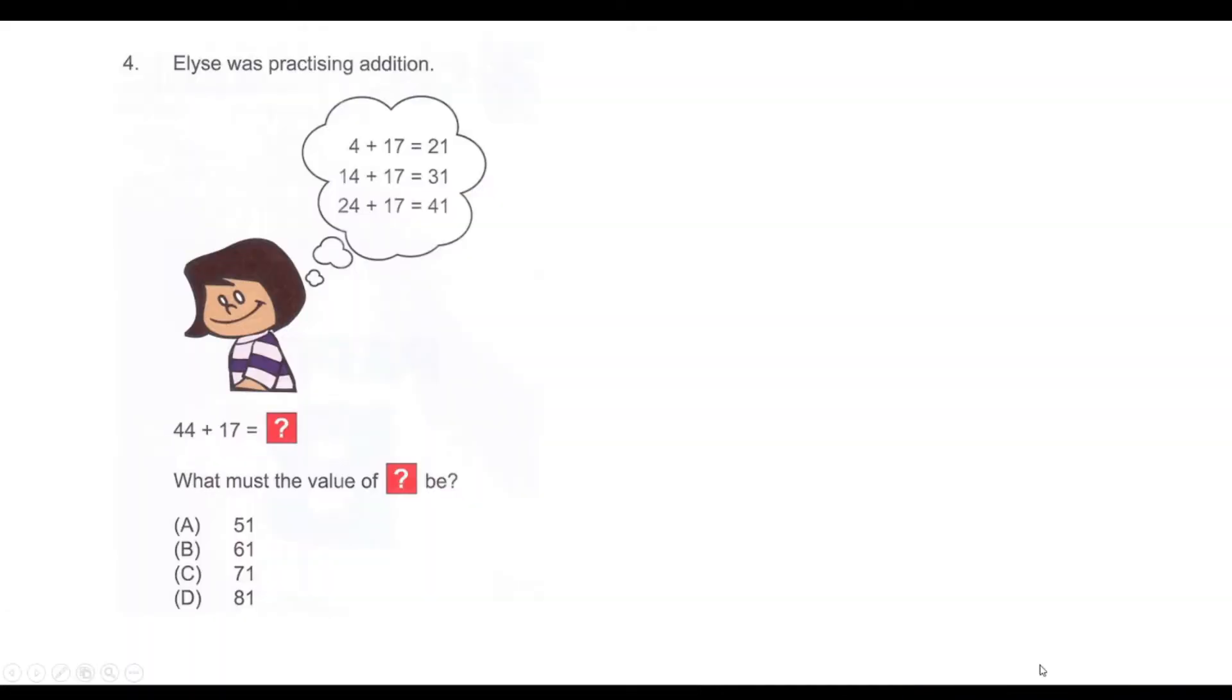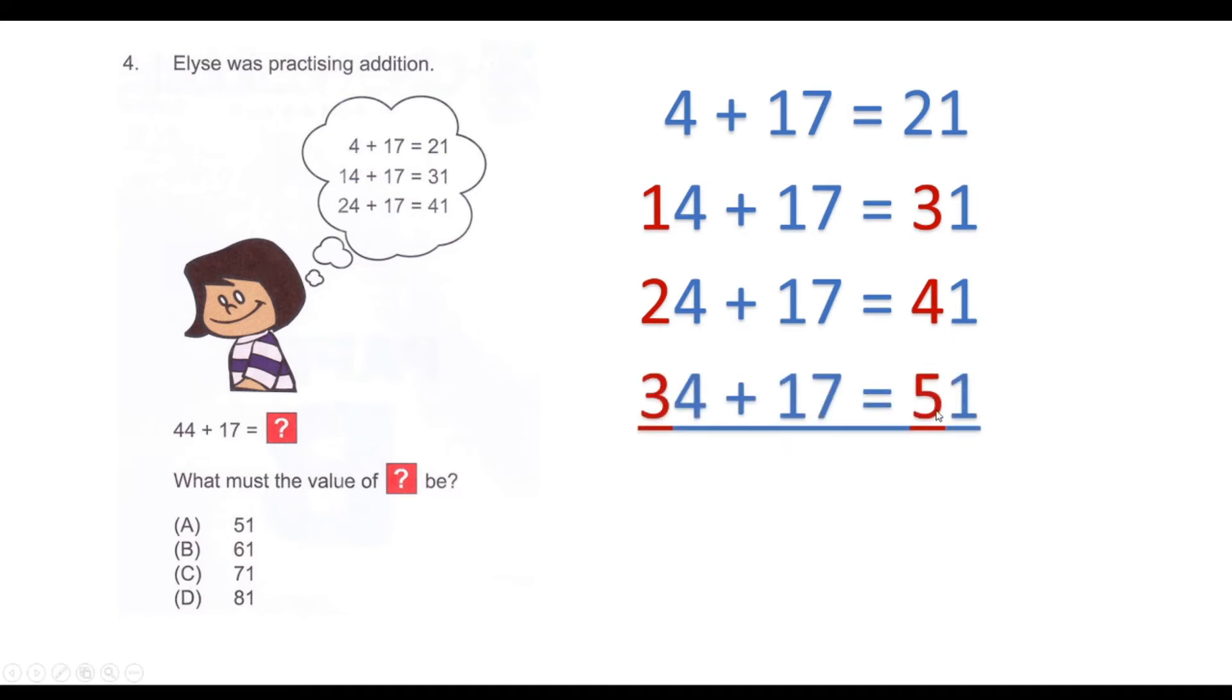The first question: Alice was practicing addition. She had 4 plus 17 equals 21, 14 plus 17 equals 31, and 24 plus 17 equals 41. She needs to find out what is 44 plus 17. This is a pattern - as the tens increase on the left-hand side, the tens also increase on the right-hand side. Continuing this pattern, 34 plus 17 would be 51 and 44 plus 17 would be 61. Hence, our answer is option B, 61.